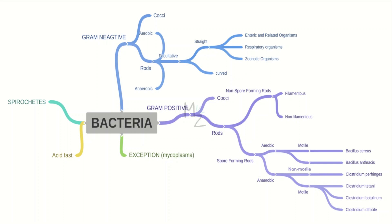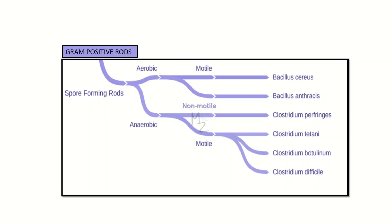Let's zoom in. The aerobic ones are further classified into motile and non-motile. The motile one is Bacillus cereus, and the non-motile one is Bacillus anthracis — that's the one we're looking at in today's video.